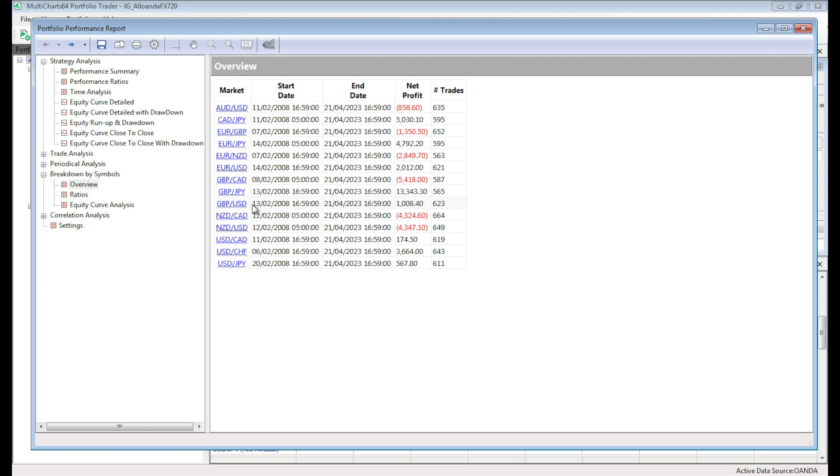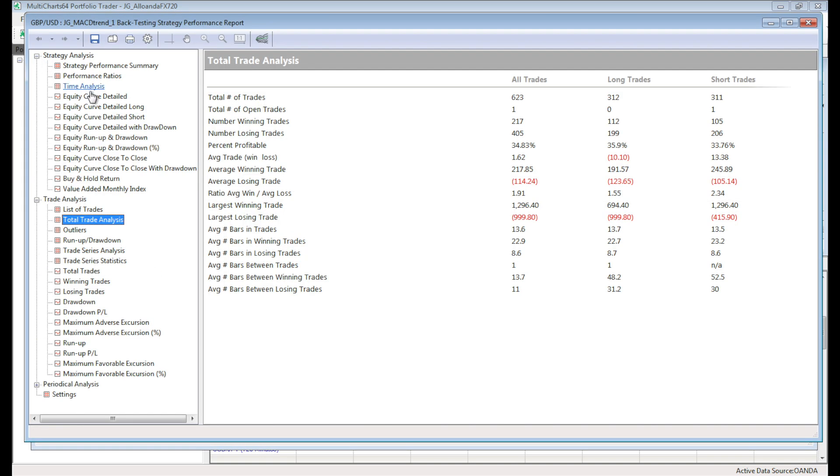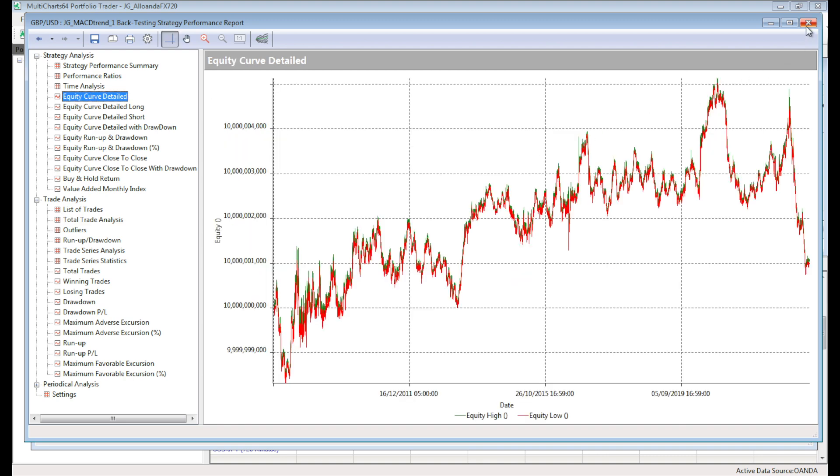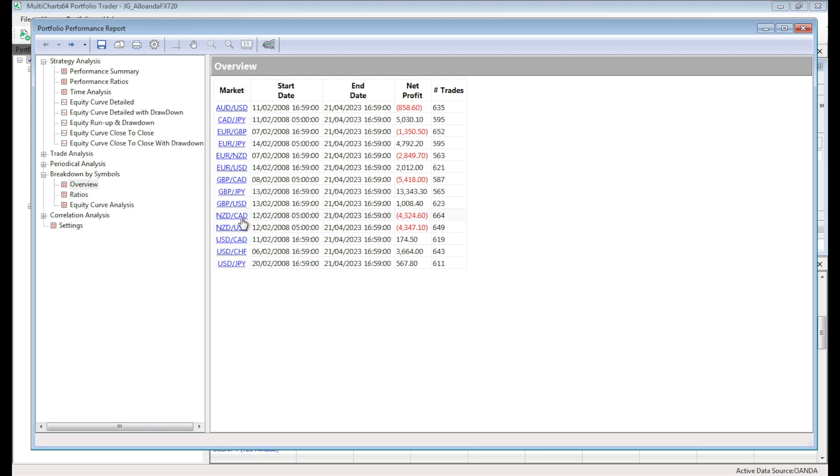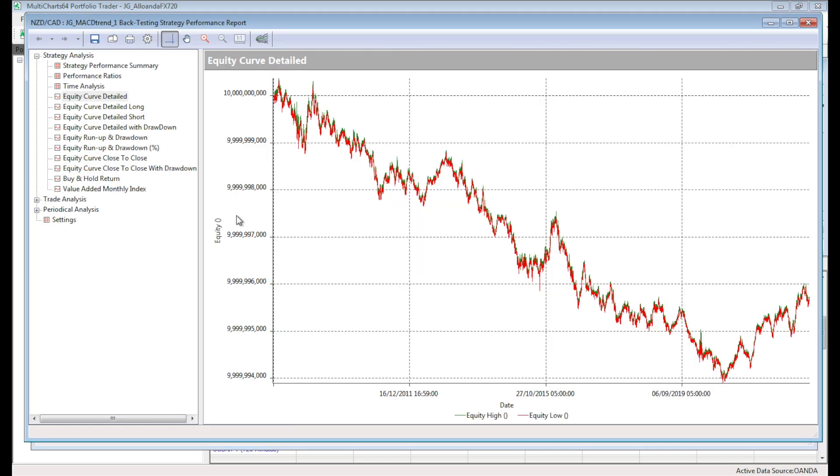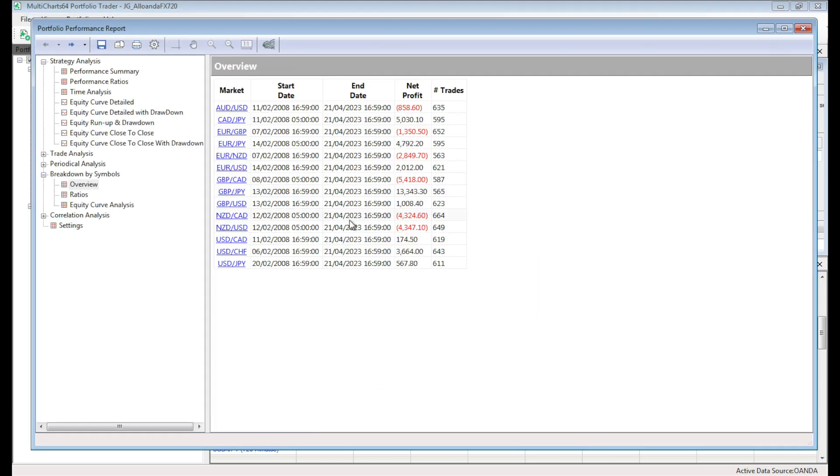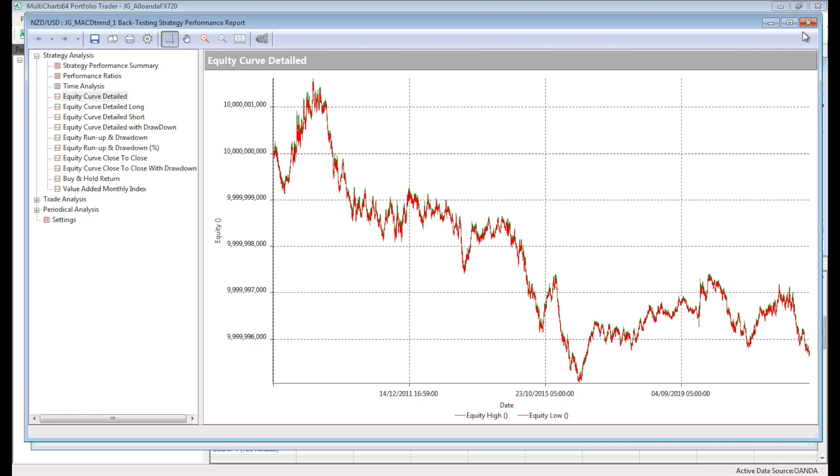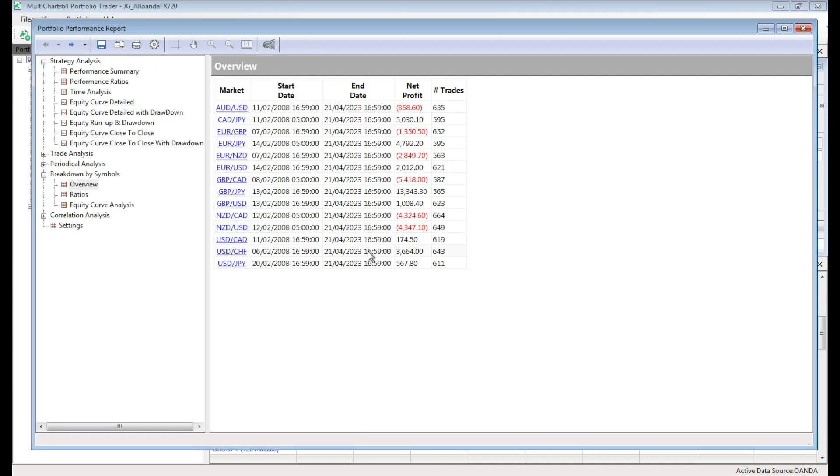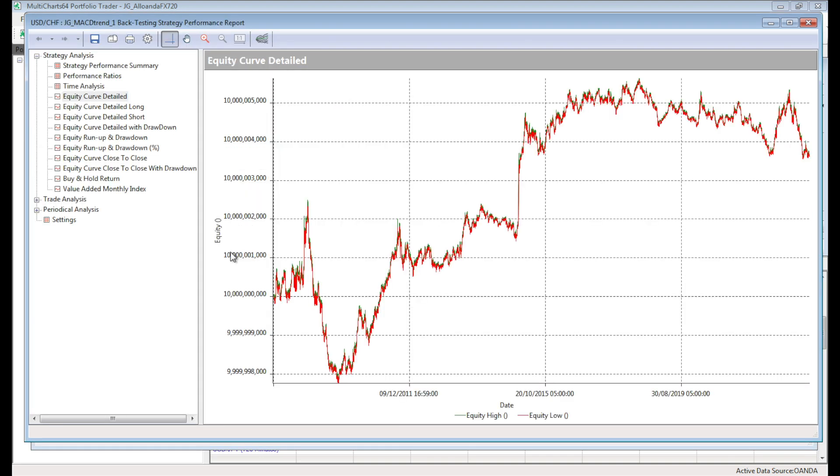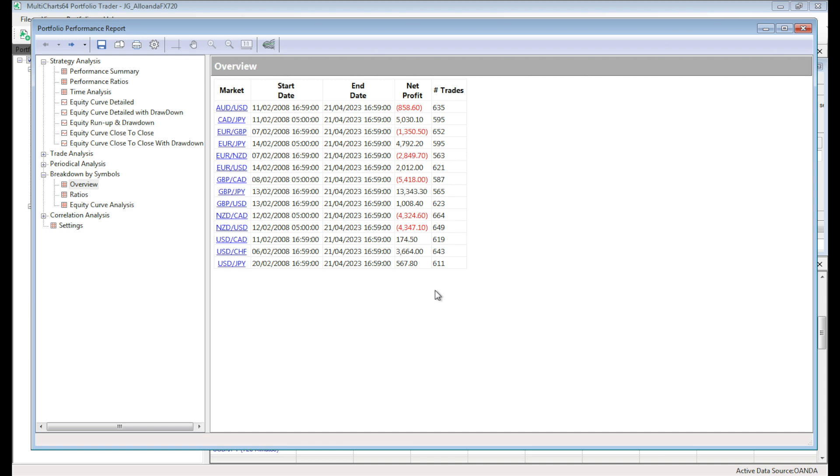Pound US dollar not making much. Equity curve's not great. New Zealand dollar, Canadian dollar losing a lot. Again, another one of those ones where maybe looking at using MACD for reversals might work better. New Zealand dollar, similar story. US dollar, Canadian not doing a lot. US dollar, Swiss franc making some money. Equity curve's not very good. And US dollar, Japanese yen not really making a lot of money at all. So probably the standout pair on the 720 minute is pound yen.